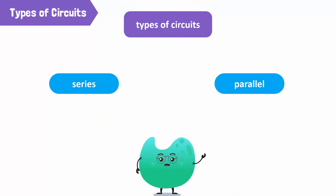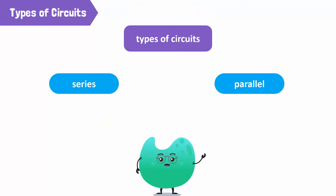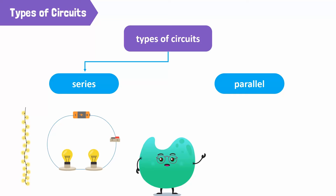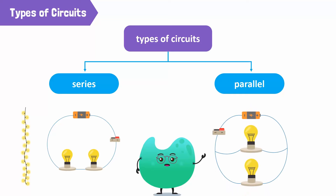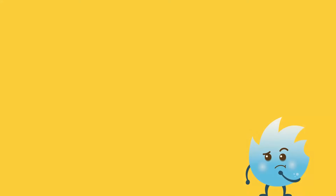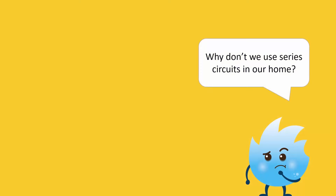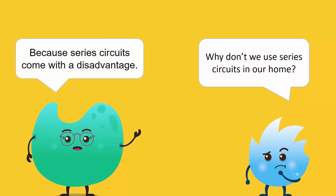Hence, there are two types of circuits: 1. Series circuits — for example, decoration lights. 2. Parallel circuits — our home appliances are always connected in parallel. But why don't we use series circuits in our home? Because series circuits come with a disadvantage.